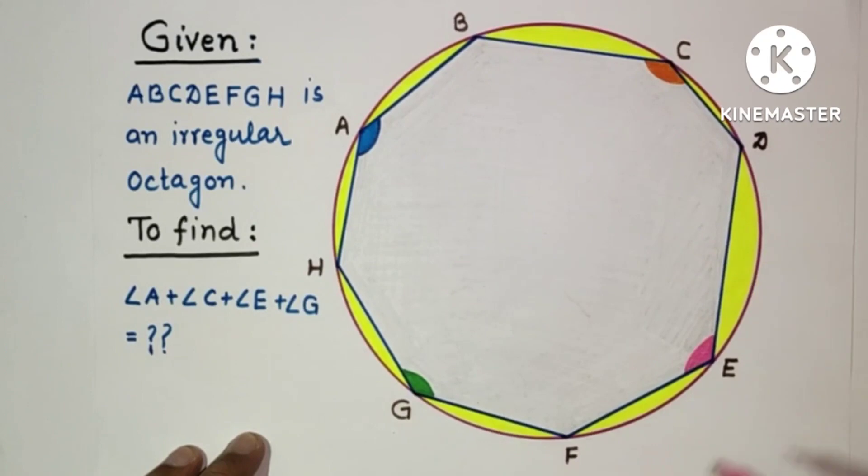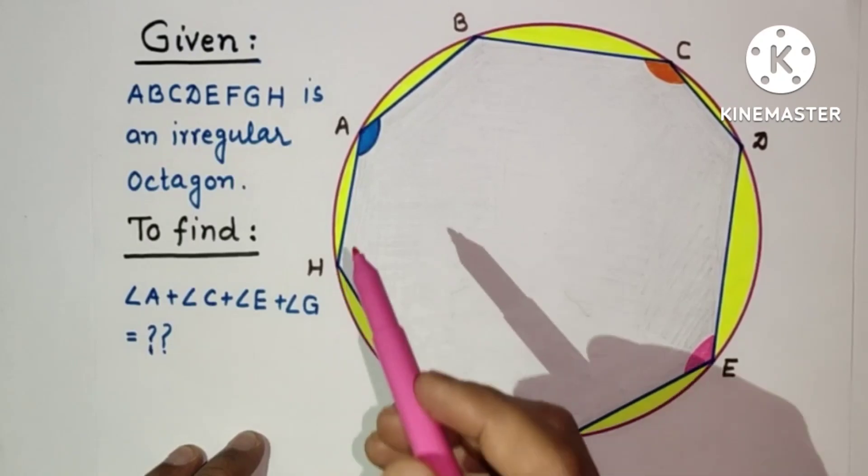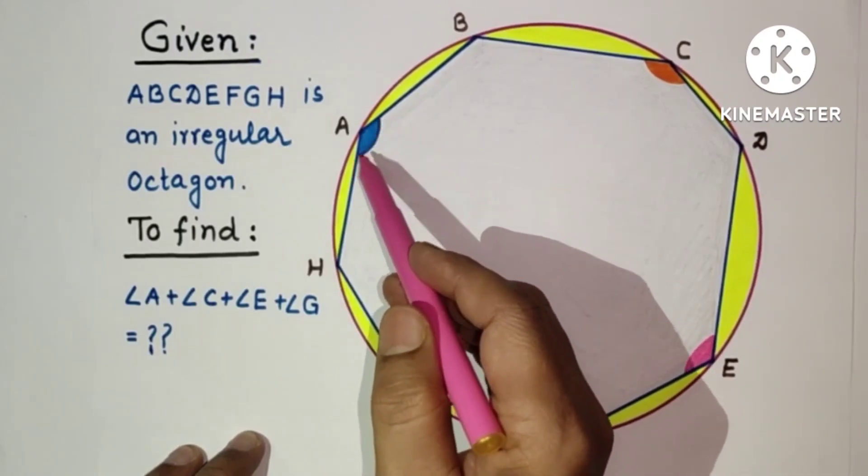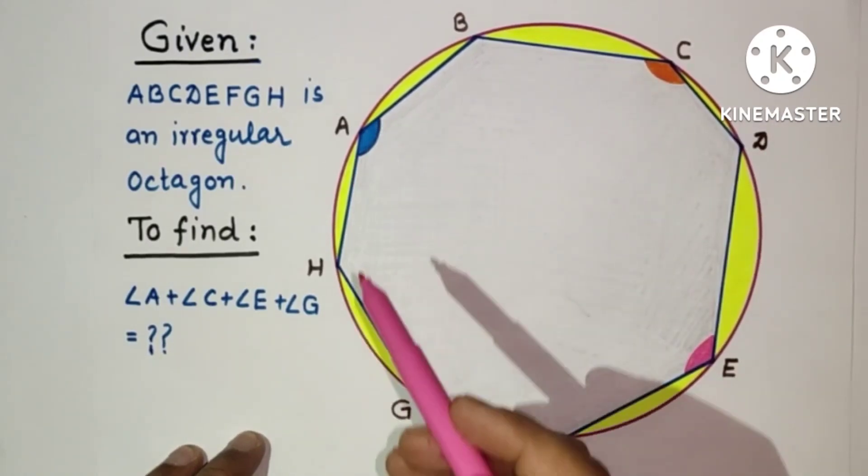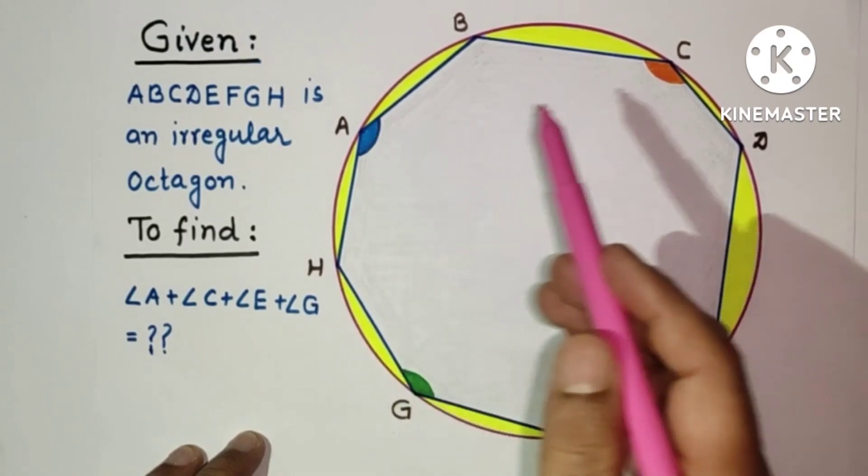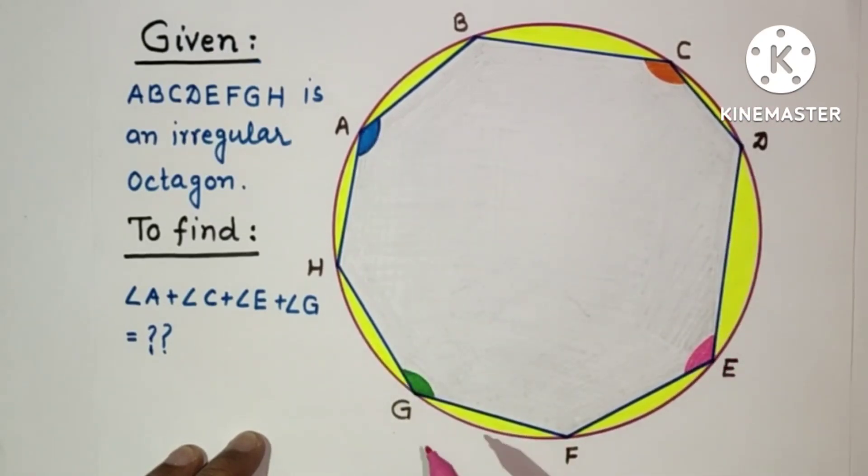We have to find the sum of these alternate four angles, the sum of angles A, C, E, and G. In this question we will use the concept that the sum of opposite angles of a cyclic quadrilateral will be supplementary.